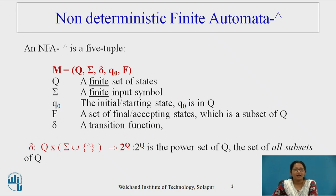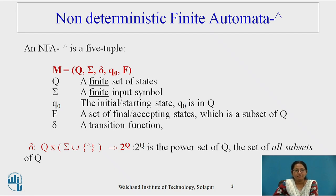An NFA with a null transition is a five-tuple machine where Q indicates a finite set of states, alphabet indicates a finite set of input symbols, Q0 is the initial or starting state, F is a set of final or accepting states which is a subset of Q, and a transition function indicated by delta.